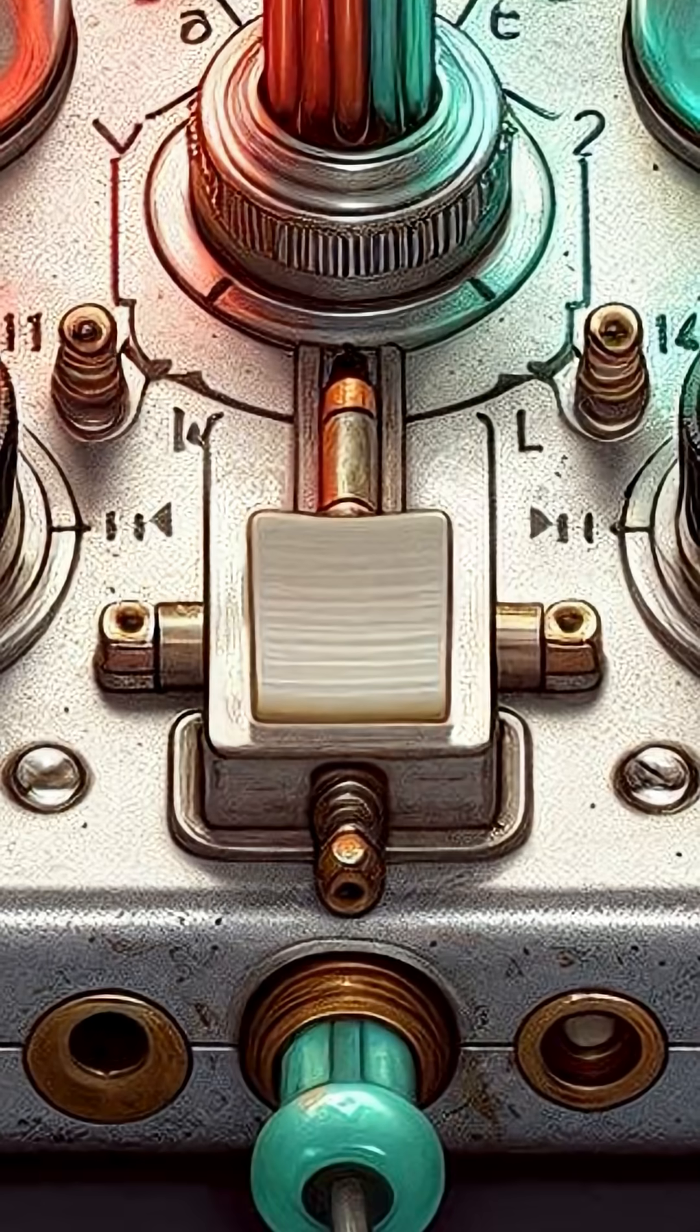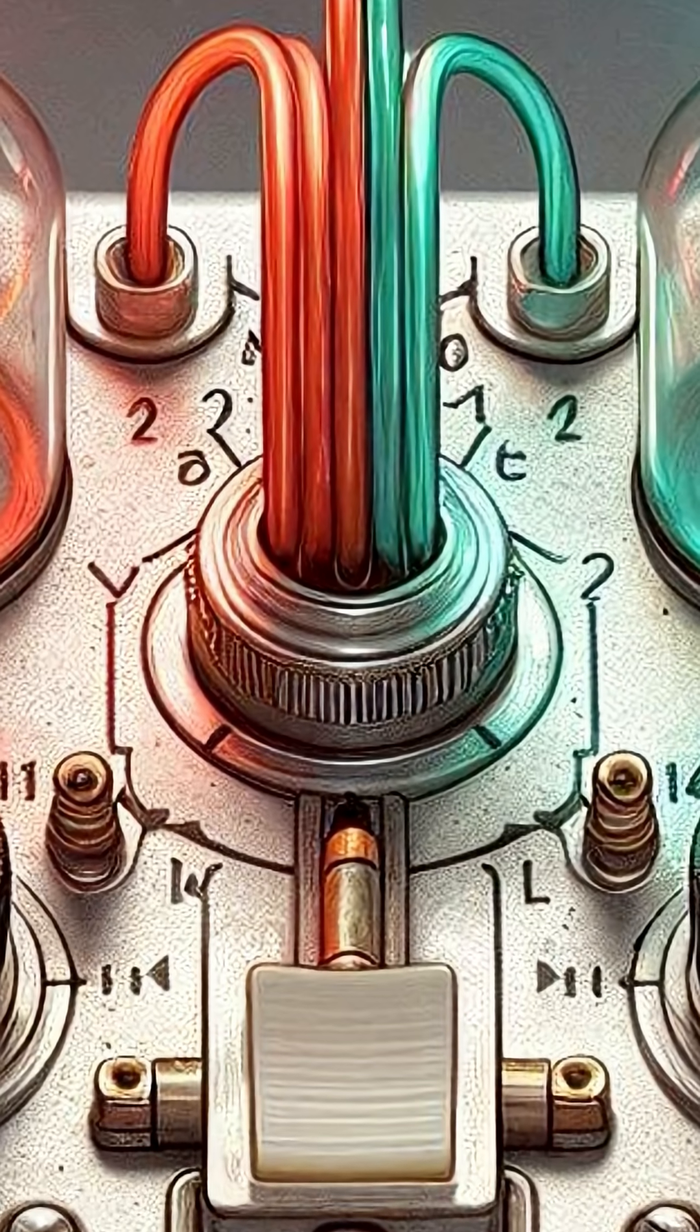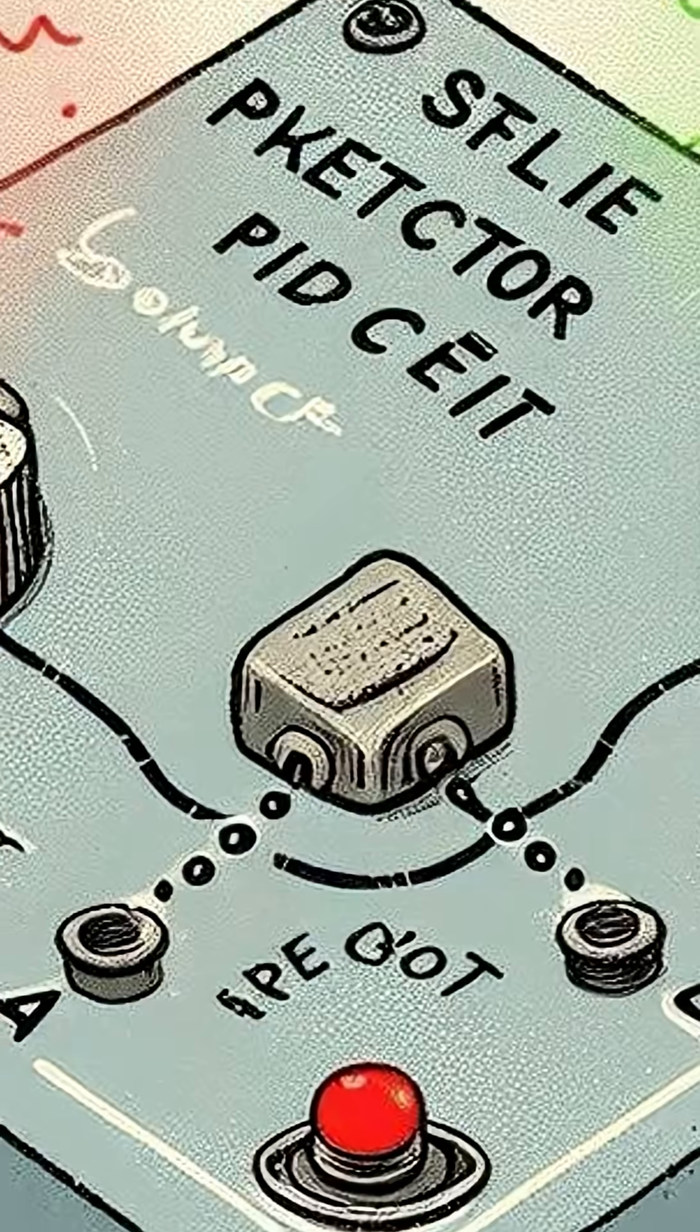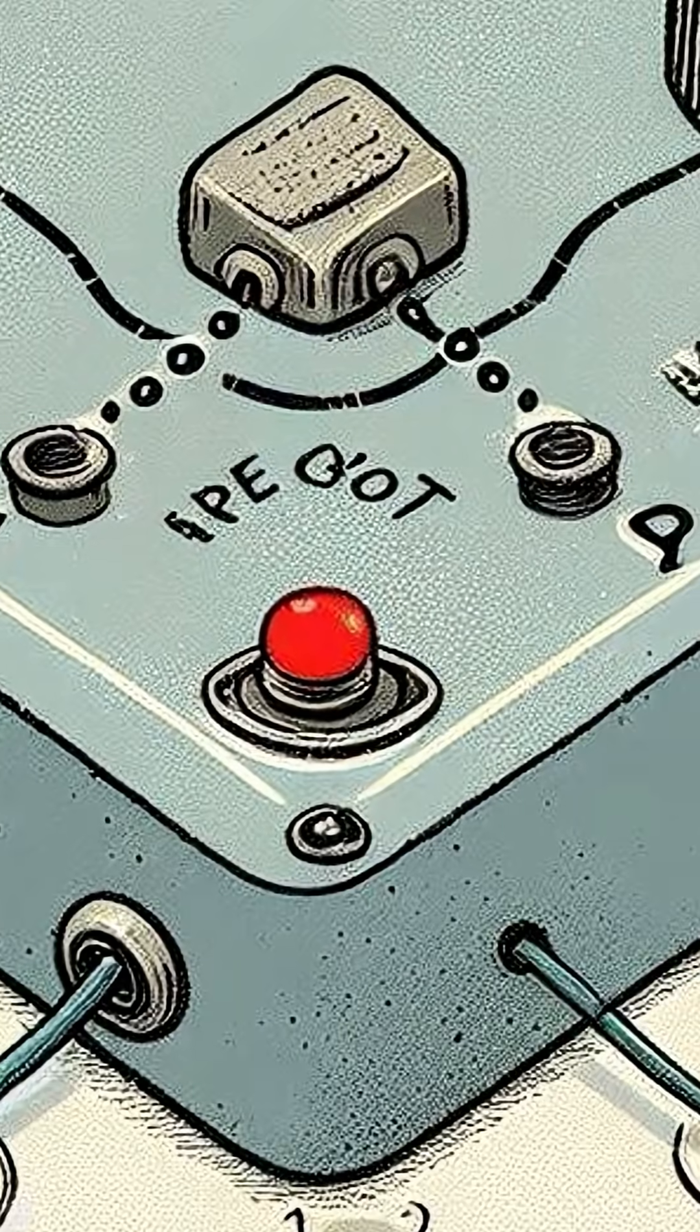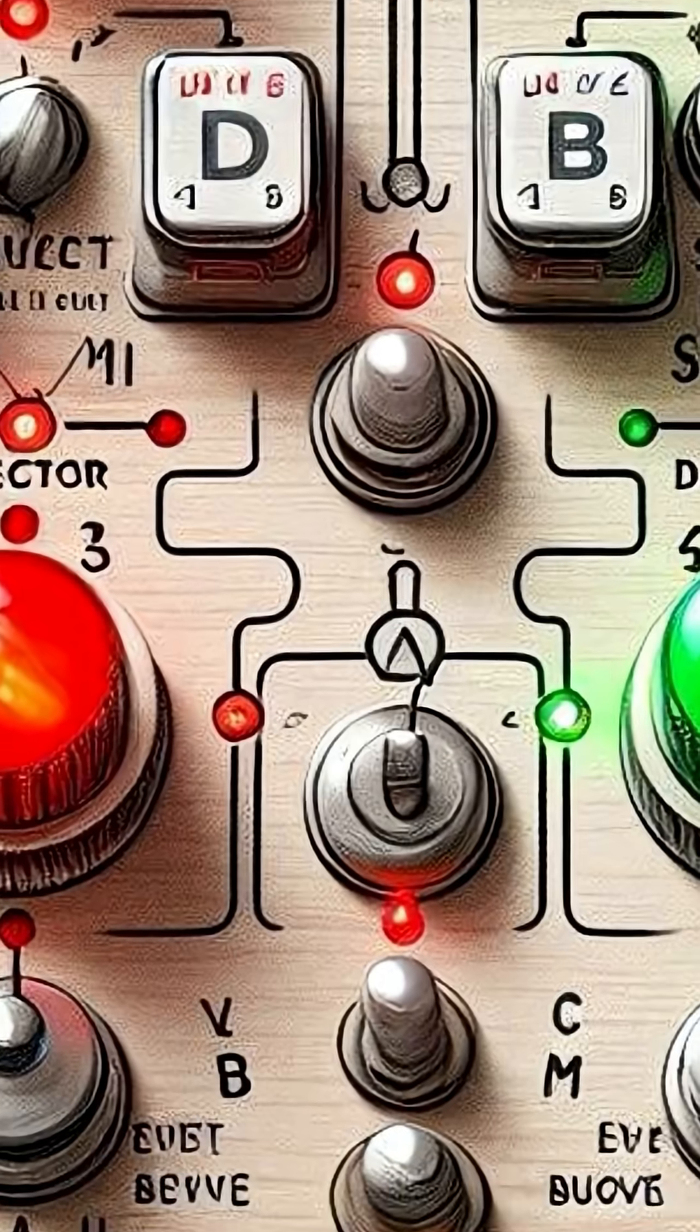When a button on the source is pushed, it sends one particle to each detector. Each detector has a switch with three settings, labeled 1, 2, and 3, and two light bulbs, a red and a green one.